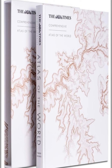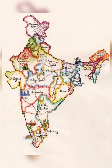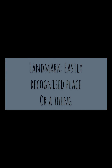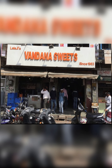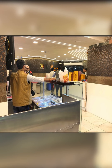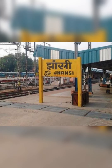Next, an atlas — a book of maps is called an atlas. When we put all the maps of the world together in one book, we call it an atlas. Next, a sketch — a sketch is a rough drawing of a map on paper. Next, a landmark — an easily recognized place or thing is called a landmark. For example, Vandana Suites is a landmark used to locate your house.